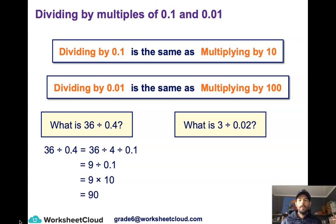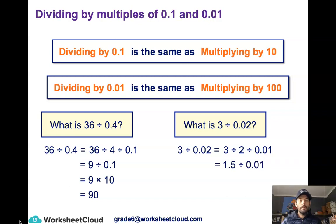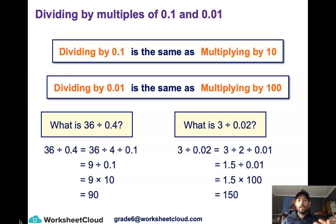The same applies with 0.02. I can split 0.02 into 2 divided by 0.01. All I need to do is work out 3 divided by 2 — that's 1.5. Then 1.5 divided by 0.01 is the same as multiplying by 100, and 1.5 times 100 gives us 150. Remember, you can also do it with 0.2, 0.3, as well as 0.02 and 0.03 as indicated in the examples — you've just got to change your calculation to fit.